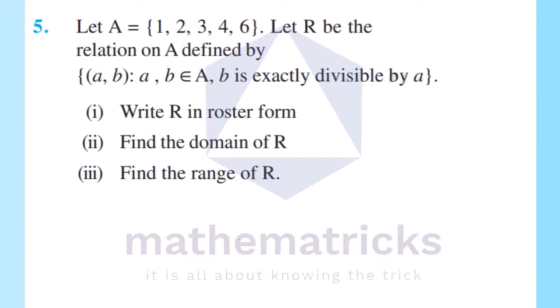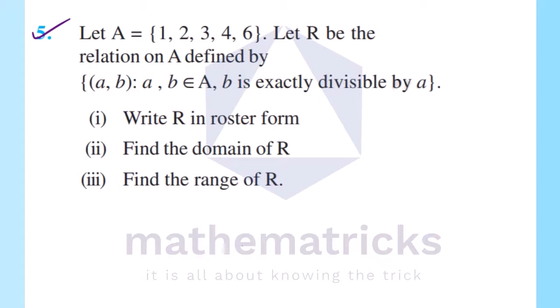Let's look at the fifth question. Let A be equal to the set {1, 2, 3, 4, 6}. Let R be the relation defined by the set of all (a, b) such that a, b belongs to A and b is equally divisible by a. First question: write R in roster form. Second question: find the domain of R. Third question: find the range of R.